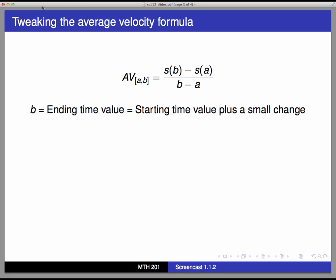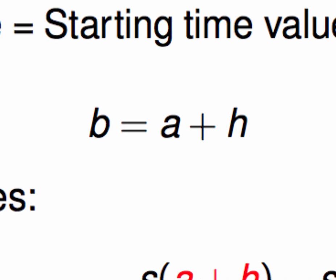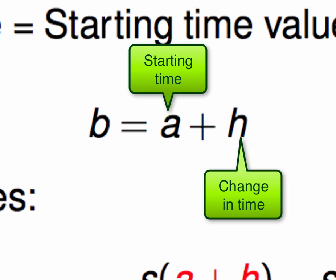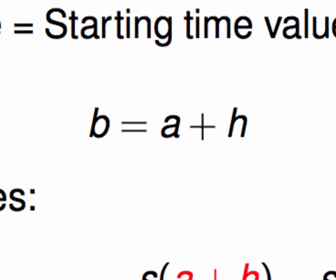So, let's keep calling the start time a, and let the change in elapsed time be denoted by the letter h. That makes b, the ending time, equal to a plus h. That's the start time, plus the change.